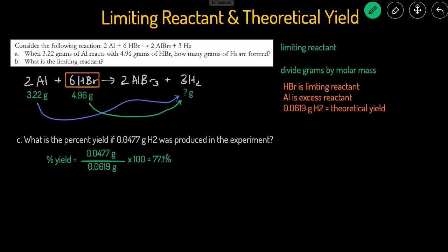And that's the summary of limiting reactants, excess reactant, actual yield, theoretical yield, and percent yield.